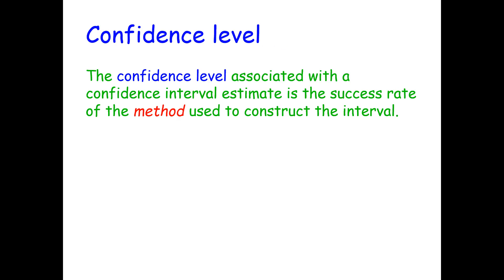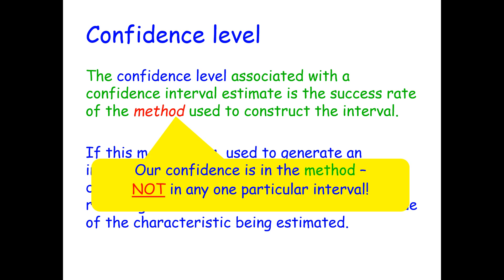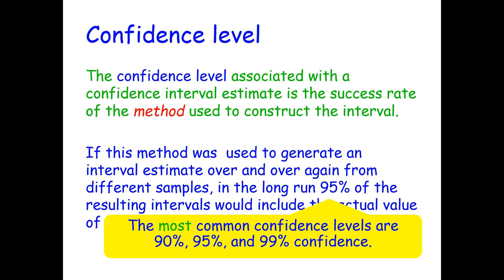The confidence level associated with a confidence interval estimate is the success rate of the method used to construct the interval. If this method was used to generate an interval estimate over and over again from different samples, in the long run, 95% of the resulting intervals would include the actual value of the characteristic being estimated. Our confidence is in the method, not in any one particular interval. The most common confidence intervals are 90%, 95%, and 99% confidence.